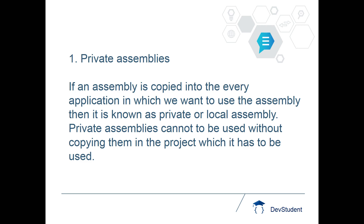Private assemblies have to be copied along with the project because private assemblies are not placed in a global location. If an assembly is copied into every application in which you want to use it, then it is known as a private or local assembly. Private assemblies cannot be used without copying them into the project — every time when you want to use a private assembly you have to copy it into that project and use it.